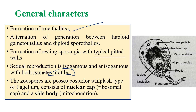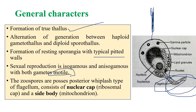For the zoospores, the type of flagellation is posterior whiplash type — whiplash means without hair, and posterior means downward direction. The flagellum points downward. It also consists of a nuclear cap inside the nucleus, also called a ribosomal cap, and a side body which is the mitochondria.